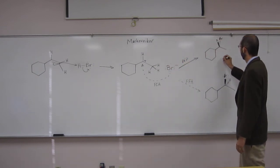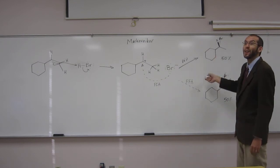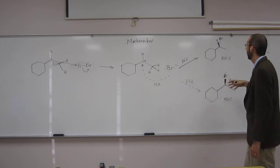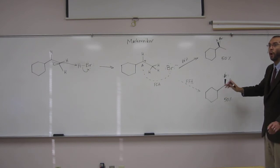And again, like what we were saying, there's no preference for it to attack from the front face or from the back face. So what we'll find, you're going to get 50% of this isomer and 50% of this isomer. We call these stereoisomers.